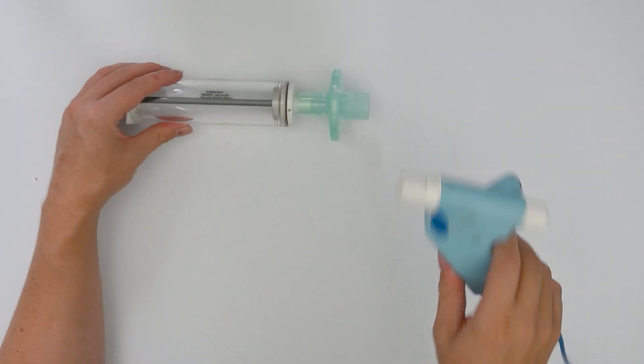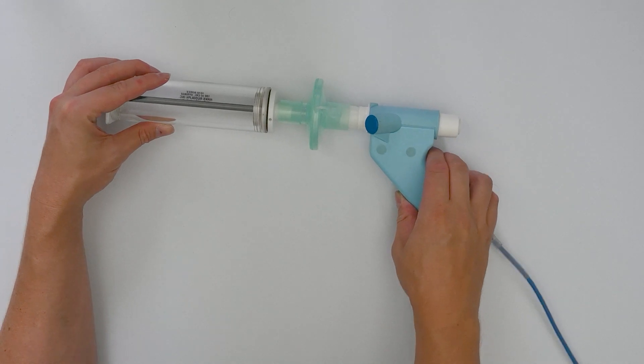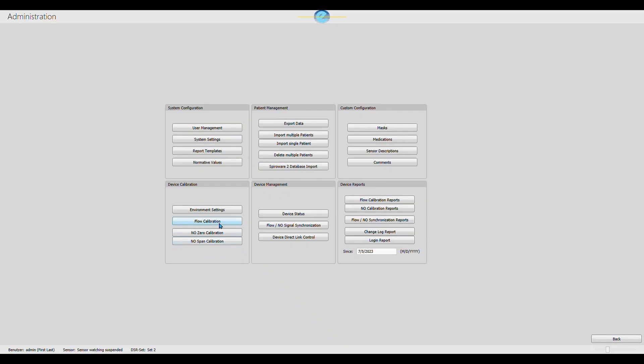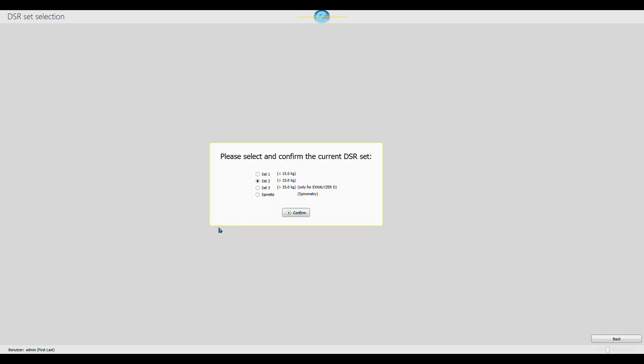Attach the dead space reducer with a bacteria filter to the calibration syringe. Start the flow calibration procedure in SpiroWare software. This can be done by going to Administration and selecting Flow Calibration. Confirm the selection of the appropriate DSR set.